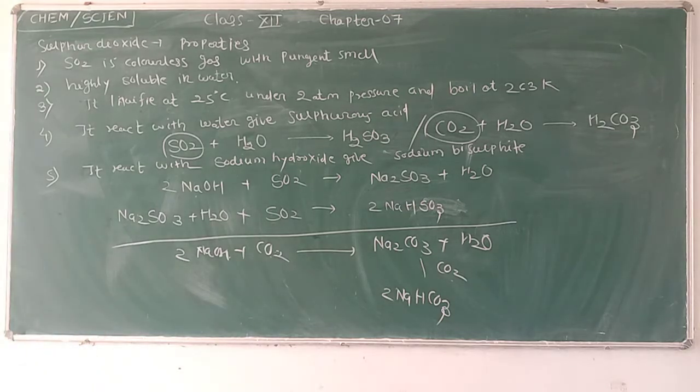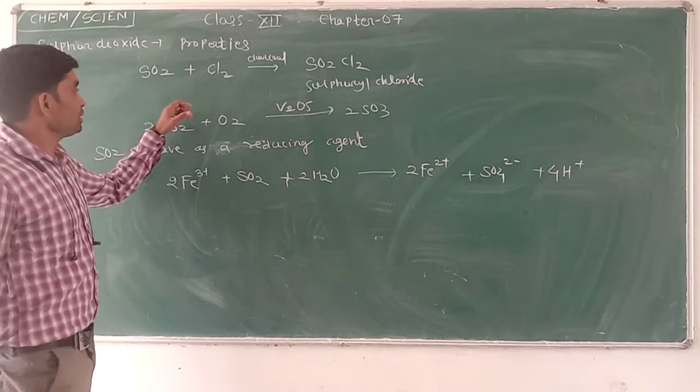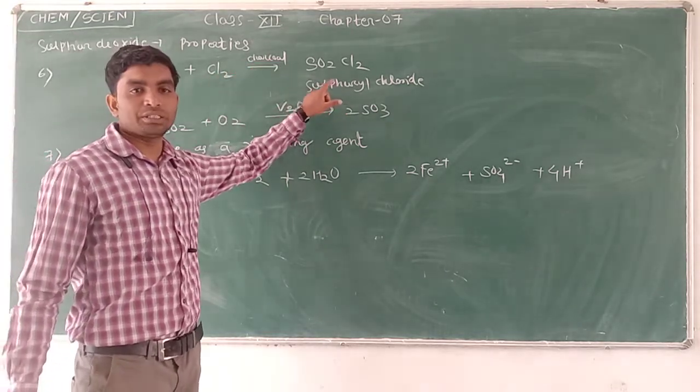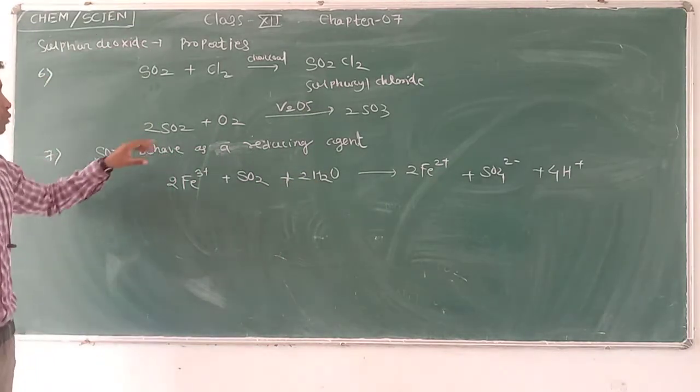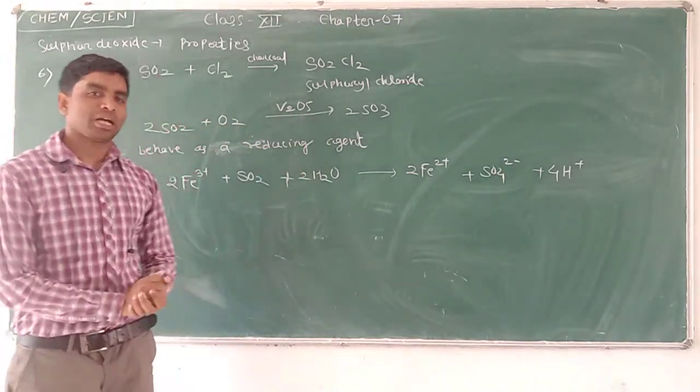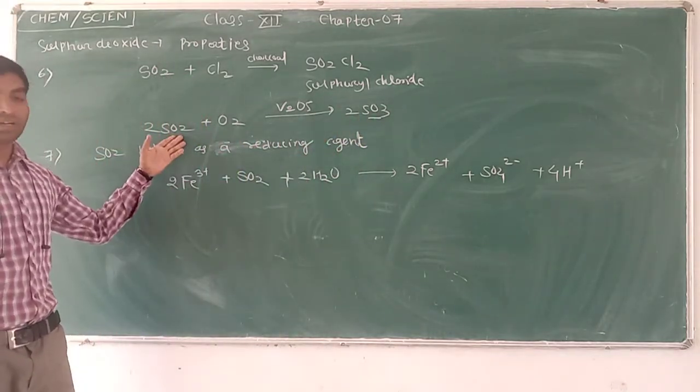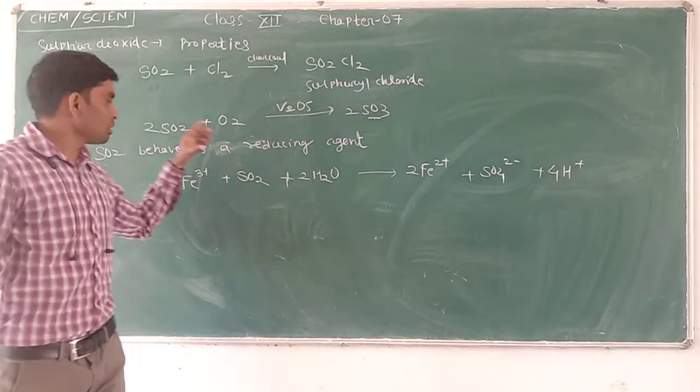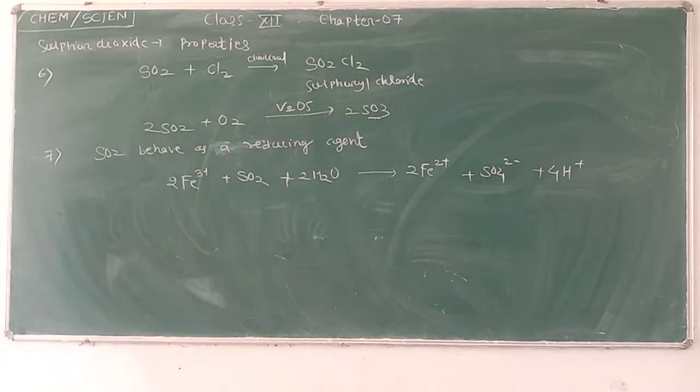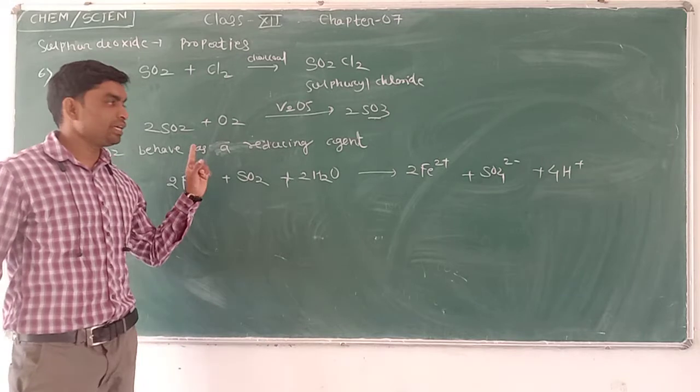Sulphur dioxide when treated with chlorine in the presence of charcoal gives sulphuryl chloride SO2Cl2. Sulphur dioxide can be oxidized in the presence of vanadium pentoxide catalyst to give SO3.